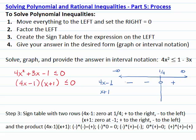For the factor (x plus 1), the zero is negative 1. The factor is zero when x equals negative 1, positive when x is greater than negative 1, and negative when x is less than negative 1. And finally, we have the last row, which is the expression on the left, the product of the two factors.